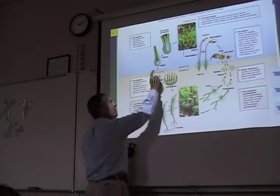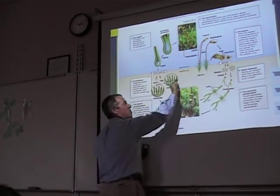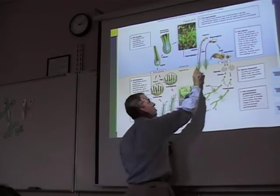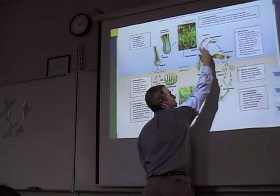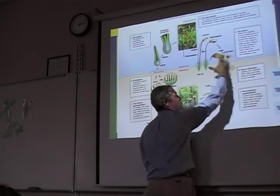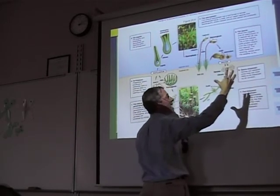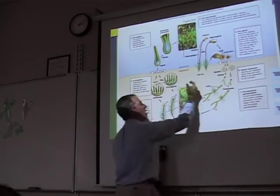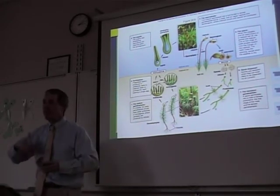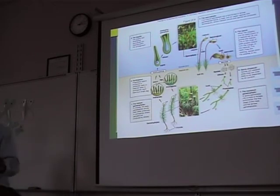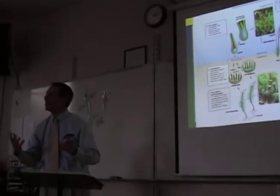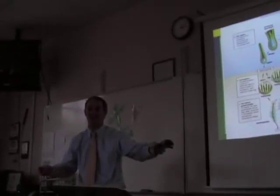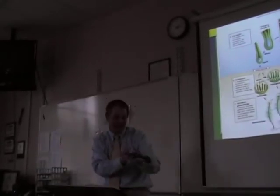So to summarize: sperm swim to the egg and fertilize it, giving you a zygote. The zygote grows into a stalk and capsule. Inside the capsule, meiosis produces haploid spores. The spores come out, land somewhere, and grow little runners that shoot up new gametophytes. That's the life cycle — that's how a moss sexually reproduces. With sexual reproduction, you can create a lot of variation in your offspring; sex allows new young that are different from their parents.